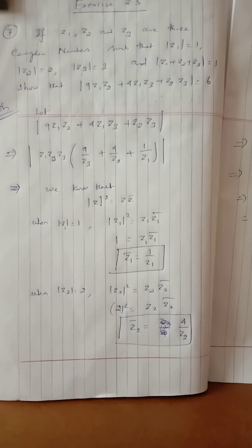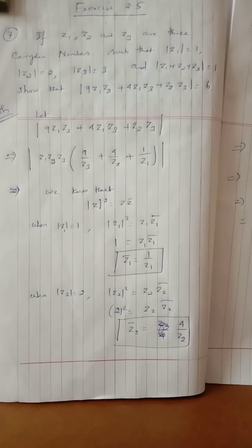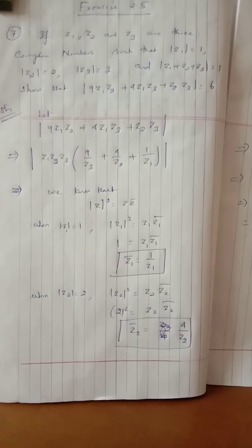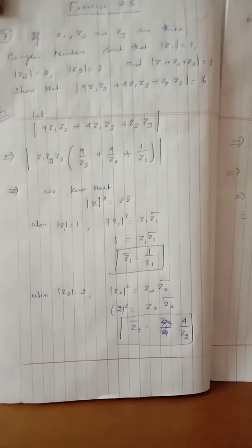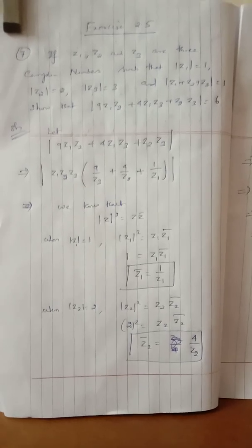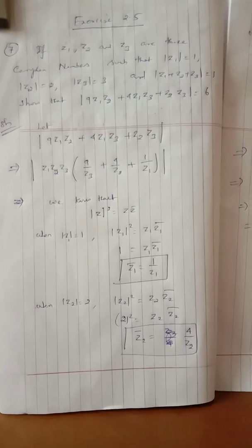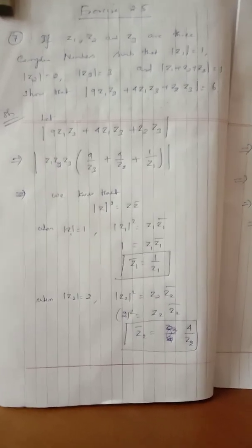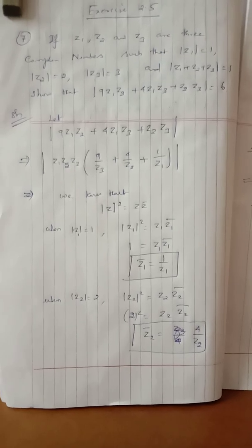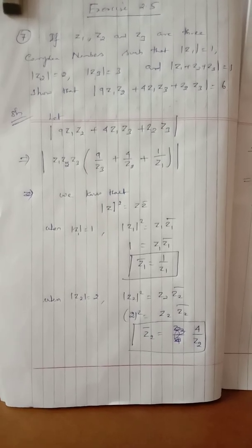Left hand side, our proof is: modulus of 9Z1Z2 plus 4Z1Z3 plus Z2Z3 equals 6. First, take the left hand side. Now, there are three conditions: modulus of Z1 equals 1, modulus of Z2 equals 2, modulus of Z3 equals 3, and modulus of Z1 plus Z2 plus Z3 equals 1. So we take the left side: modulus of 9Z1Z2 plus 4Z1Z3 plus Z2Z3.